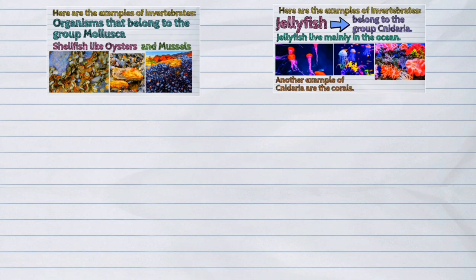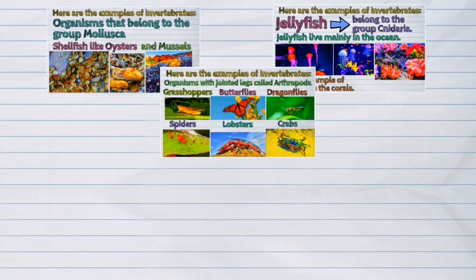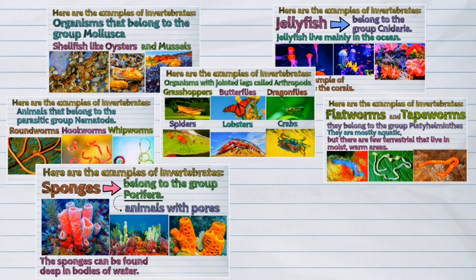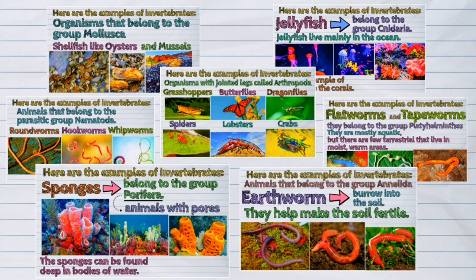It is estimated that as much as 97% of all animal species are invertebrates. There are lots of interesting facts about them. They might be simple, but they do lots of wonders in the world.